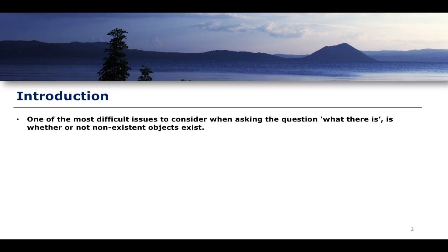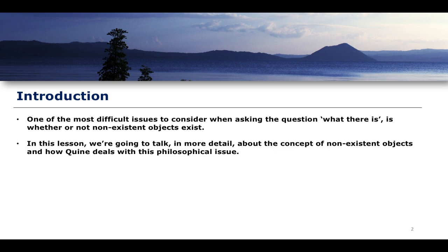This is quite interesting because one of the things you have to think about when doing ontology is trying to work out what you are ontologically committed to — i.e., what you believe to exist. Quine talks about this quite a lot, specifically in his paper 'What There Is,' where he discusses whether or not non-existent objects exist. We'll explore this in detail, as it speaks to how Quine approaches ontology more broadly.